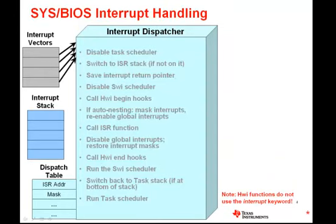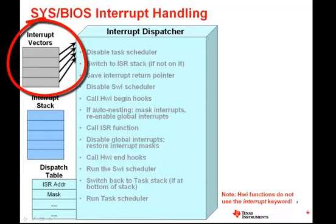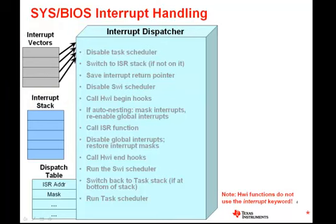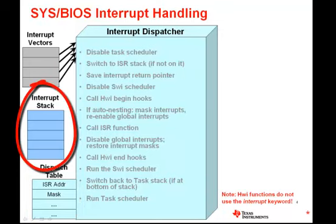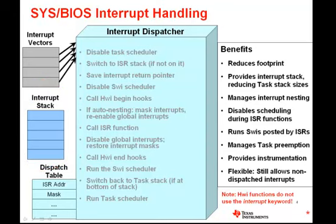At the core of the SysBIOS Hardware Interrupt is a piece of technology called the interrupt dispatcher. The dispatcher makes it possible for hardware interrupts to be run properly with other BIOS threads in the system, and also provides other benefits such as optimization and ease of use. When a Hwi is created in a system, the location of the dispatcher is what is patched into the interrupt vector table, while the address of the interrupt service routine, the interrupt mask, and other Hwi params information is stored in the dispatch table data structure. If any interrupts preempt one another, an interrupt stack is used to save the context. Because the dispatcher is a piece of code common to all the interrupt handling, it can help reduce the code size footprint of our system.